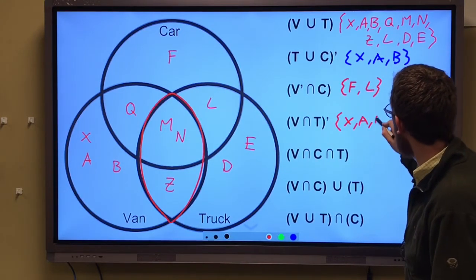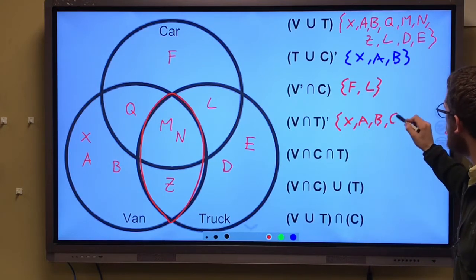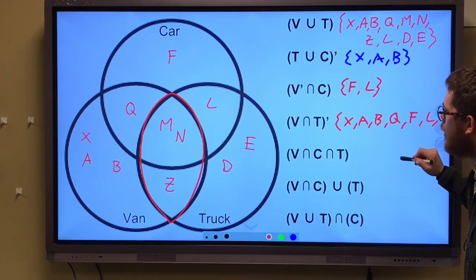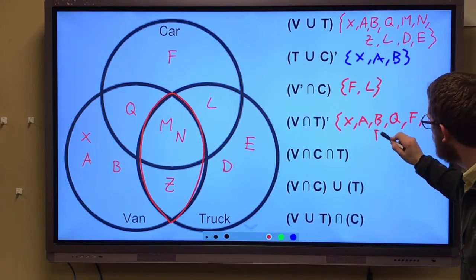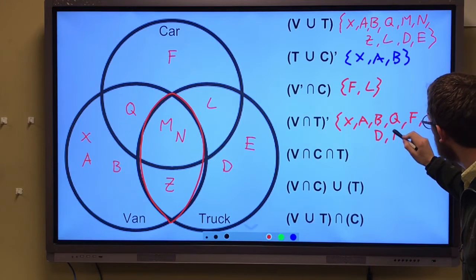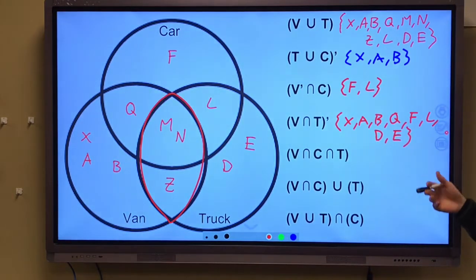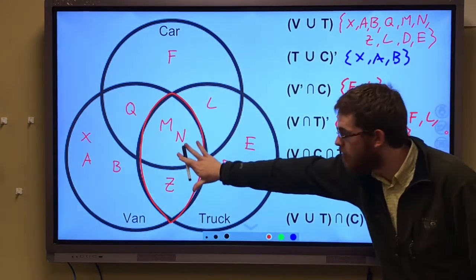Xavier, Abby, Beth, Quentin, Frank, Leticia, Dede, and Evan. We have all of those. Those are the not V and T.